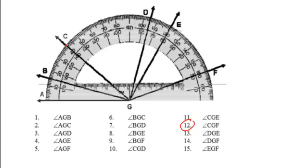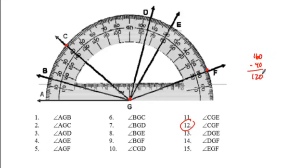Question 12, we're looking at measuring angle CGF. If we find the difference between the angle measures shown on the protractor, we have a measure of 160 on the outside along with the 40, giving us a total difference of 120.